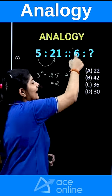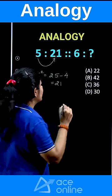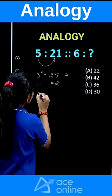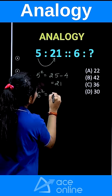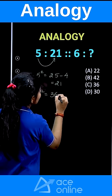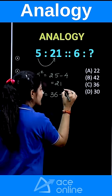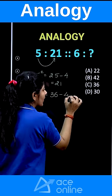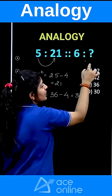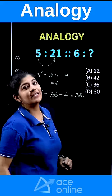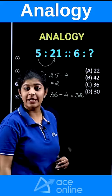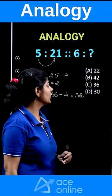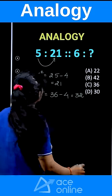We will apply the same concept with 6. 6 squared is nothing but 36, but this time if I subtract 4 from it, I am getting 32, which is not available in this particular option. That means I need to change my approach.